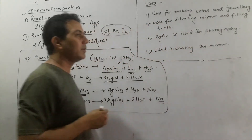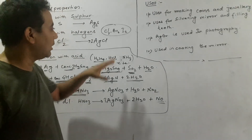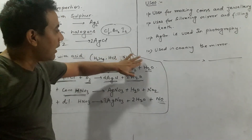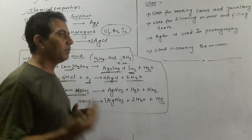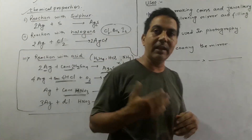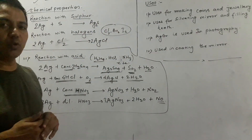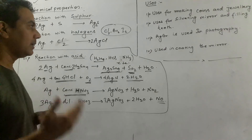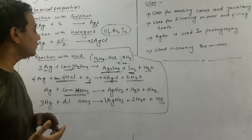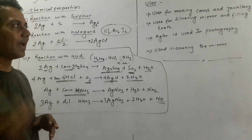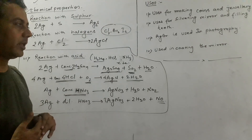There are many other uses of silver as well. We have finished studying about silver. The next and last metal in our class 10 chapter is gold. Tomorrow we will study about gold — its occurrence, its physical and chemical properties, its ores, and its uses. Thank you all.